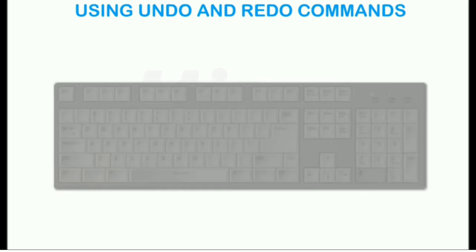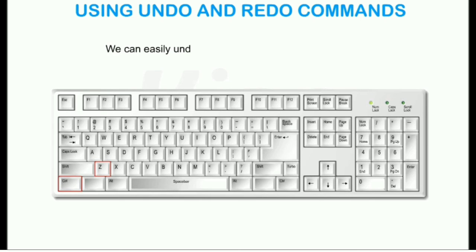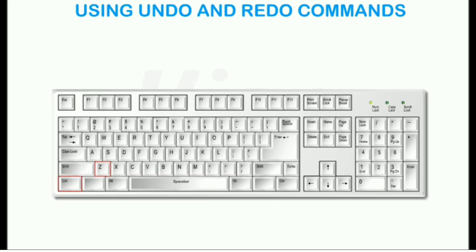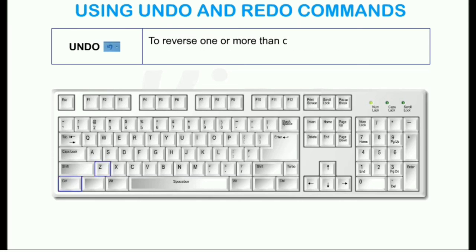Let us understand how to use the Undo and Redo commands. MS Word keeps track of all the changes that we make in a document, and we can easily undo a change and restore the original text. Undo: this option reverses the effect of the last command. To reverse one or more than one action, click on the Undo button or press Ctrl+Z.